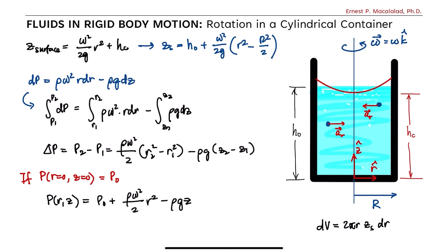So that's it. The fluid undergoing rotation in a cylindrical container will have this equation for your isobars, and this equation describes how pressure varies with position r and z within this container.